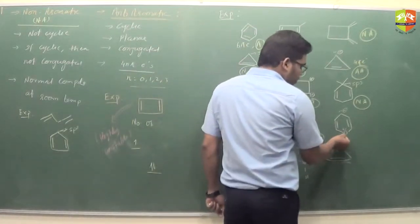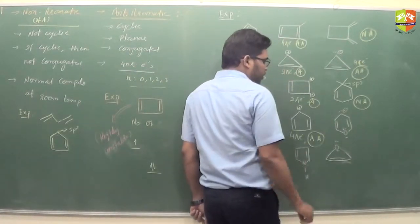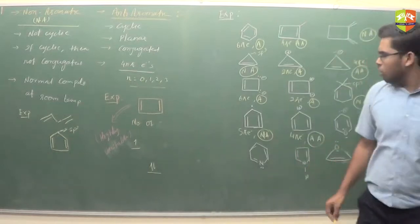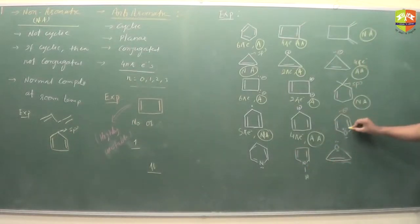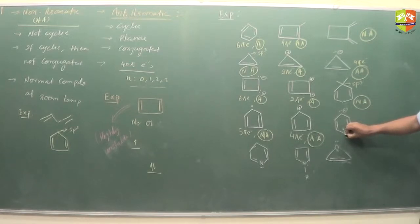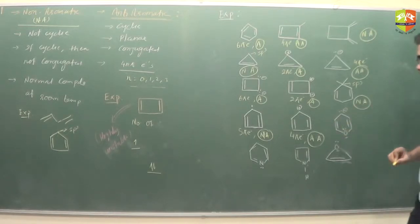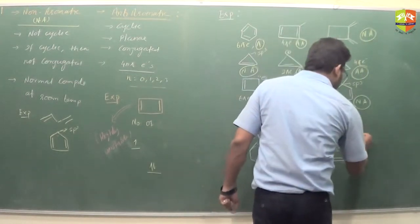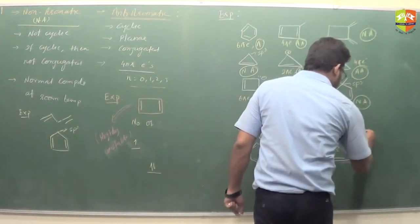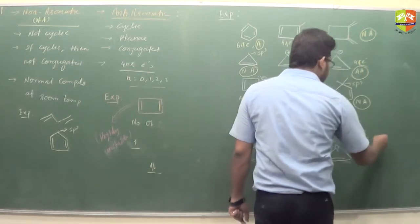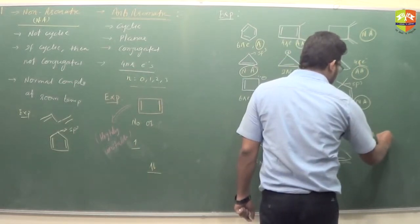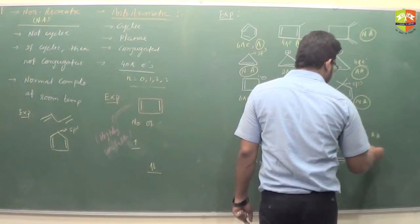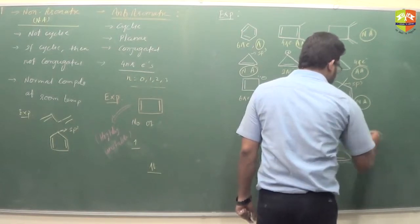Oxygen has 2 lone pairs. Out of these, one lone pair is involved in resonance and the other lone pair is perpendicular to the plane of the ring. So we will count only one lone pair to decide the aromaticity of this compound. We have 2, 2, 4, 2, 4, 6, 8 — we have 8 pi electrons, hence it is anti-aromatic.